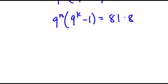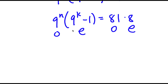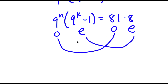Now, 9 to the power of any number is going to be odd. And 9 to the power of any number is odd, but an odd number minus 1 is going to be an even number. So 9 to the power of n is odd, and 9 to the power of k minus 1 is even. Notice that 81 is odd and 8 is even. We have an odd number times an even number equal to an odd number times an even number, meaning we can set the odd numbers equal to each other and the even numbers equal to each other.